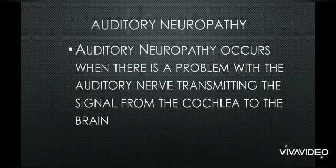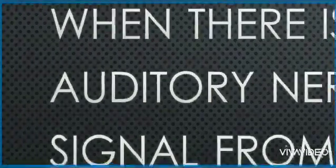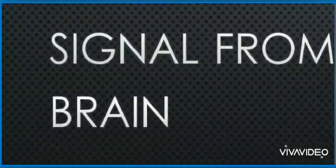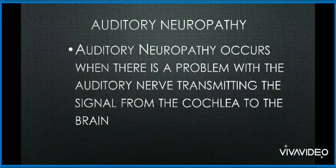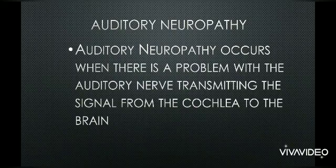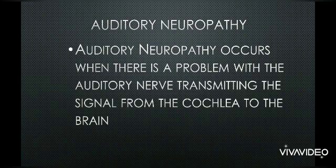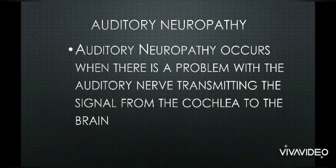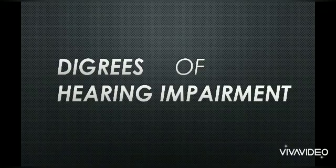If you have any kind of problem with the auditory nerve, you need to focus on this: the auditory nerve transmits signals from the cochlea to the brain. In the diagram of the ear structure, you will see that at the end of the ear we have the auditory nerve. If there is any problem with the auditory nerve, it may cause issues with the transmission of sound, and the auditory nerve will not transmit sound to the brain. This is the fourth category of hearing loss — auditory neuropathy.